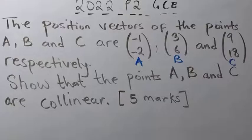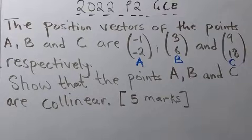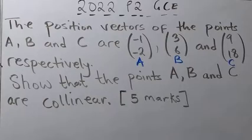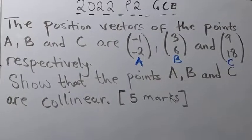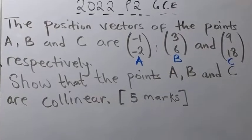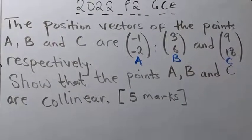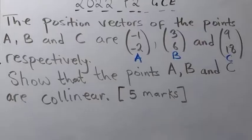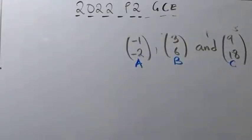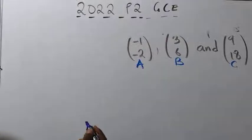You have to ensure that you know how to calculate the collinearity of vectors so that you get these five working marks. There are many methods you can use to find or state that the points are collinear. I'm going to use a very simple method that you can apply, though there are other methods you can also use.